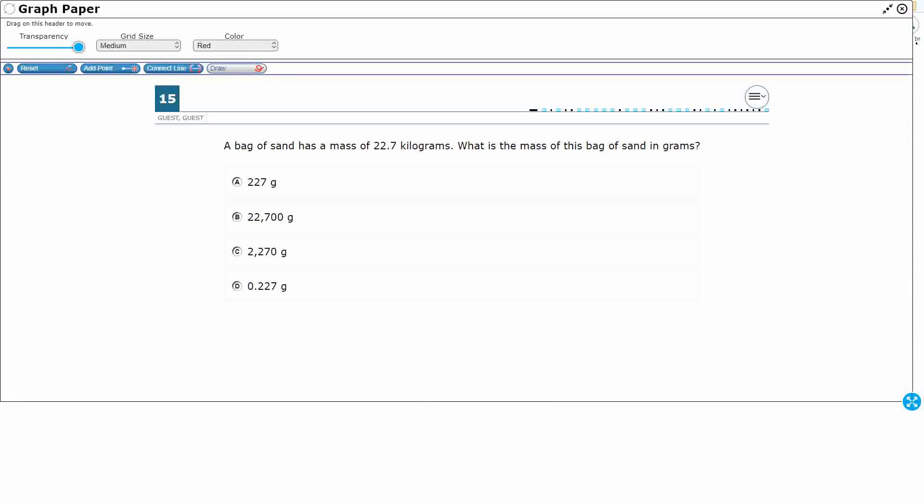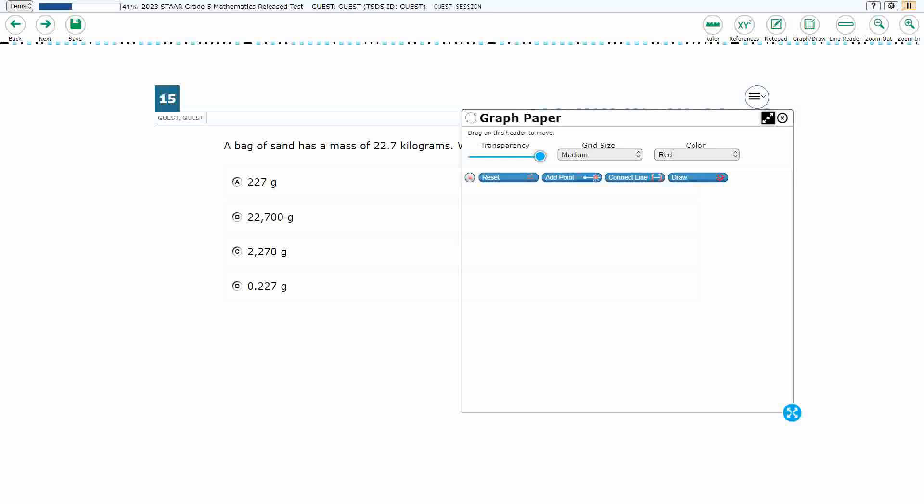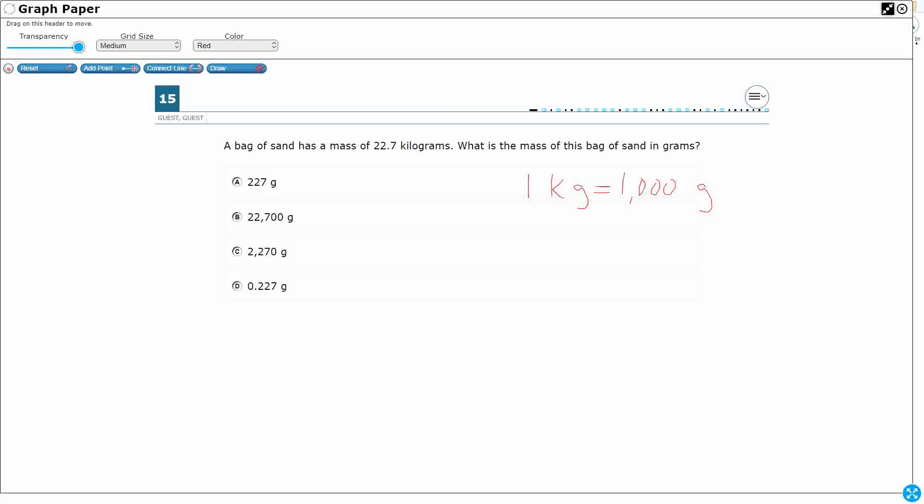So 1 kilogram equals 1,000 grams. Now, there's a few different ways that we can actually solve this since we're dealing with the metric system. One thing that I like to do is to show the beauty of the metric system, is that we can actually use place value.